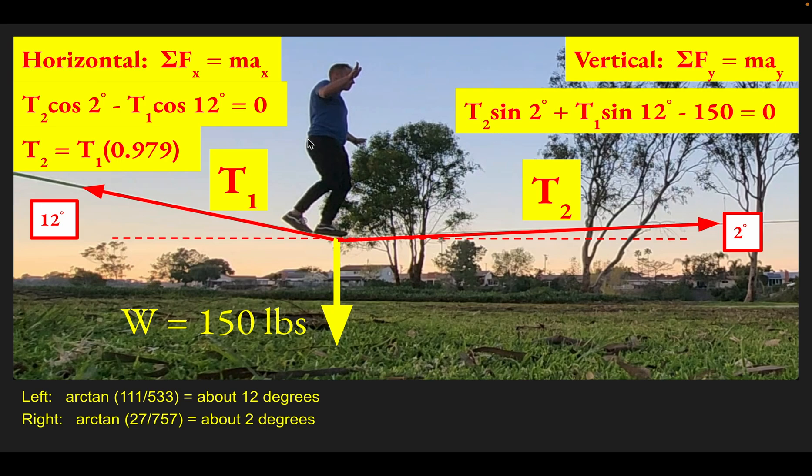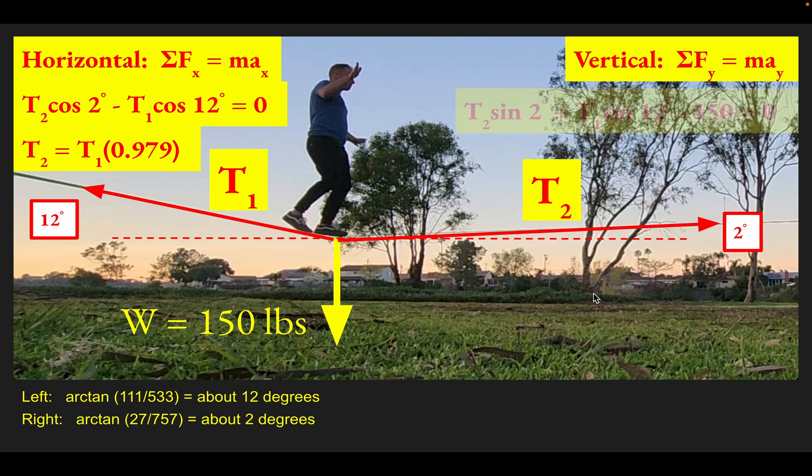Now we know T2 in terms of T1 already from the horizontal information. We can make that substitution, and then T1 will be our only unknown. Let's go for it.